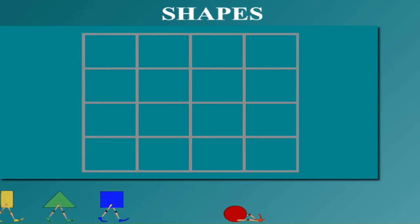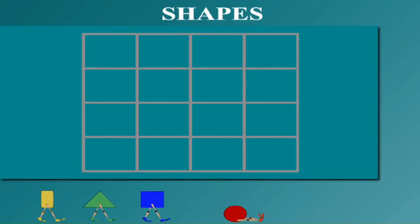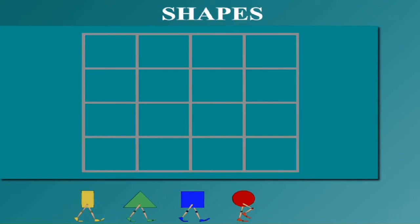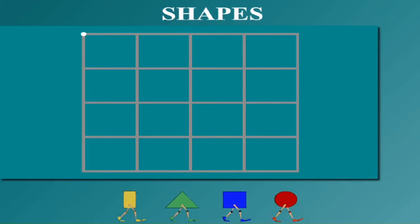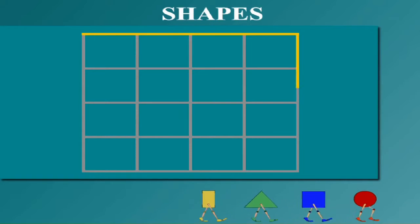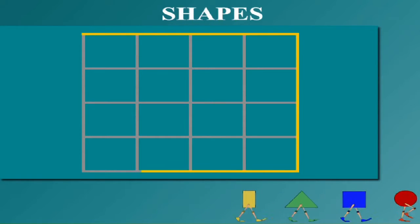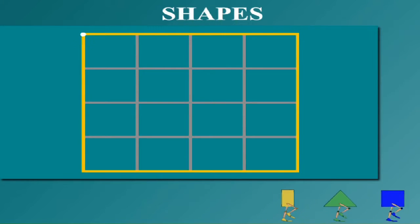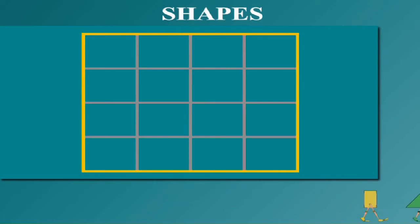Watch this pointer making straight lines. This is a square with four straight lines.